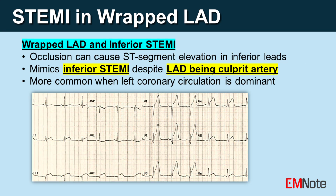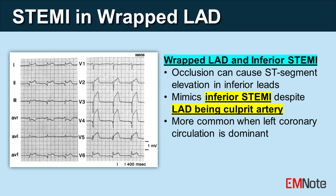Inferior STEMI changes: In cases of a wrapped LAD, particularly when it supplies the posterior descending artery (PDA), occlusion can lead to ST-segment elevation in the inferior leads, mimicking inferior STEMI, even when the LAD is the culprit artery. This is particularly noted when the left coronary circulation is dominant.